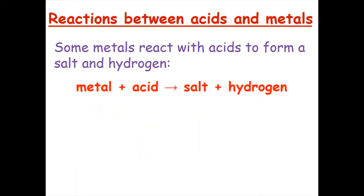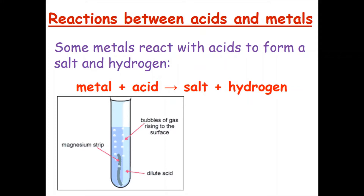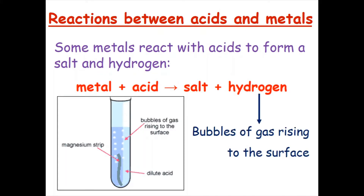Some metals react with acids to form a salt and hydrogen. The general word equation is: metal plus acid reacts to salt plus hydrogen. When we do this experiment and we put a metal strip, for example magnesium, into a dilute acid, we will be able to see bubbles of gas rising to the surface. These bubbles come from the hydrogen, and the scientific term for this is effervescence. So we see effervescence when we see bubbles.